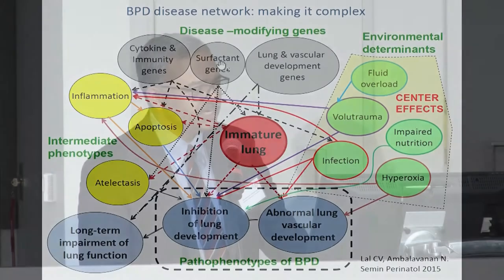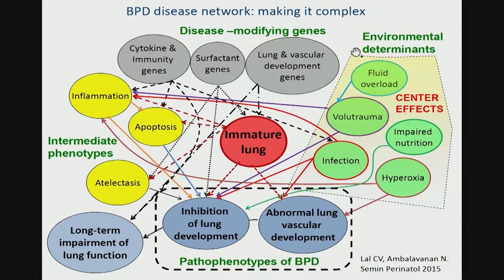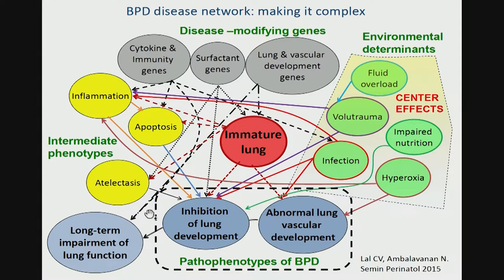But we now know it's not just a simple schematic anymore — we think in terms of disease networks. We have disease-modifying genes such as cytokine and immunity response genes, surfactant genes, various developmental genes associated with lung and vascular development, which interact with environmental determinants responsible for center effects. Center effects lead to very marked changes in BPD rates across centers, such as rates of volutrauma, amounts of infection, magnitude of impaired nutrition, and hyperoxic-induced lung injury. All these lead to intermediate phenotypes of inflammation, apoptosis, and so forth, which in turn lead to pathologic phenotypes: inhibition of lung development, abnormal lung vascular development, resulting in long-term impairment of lung function.